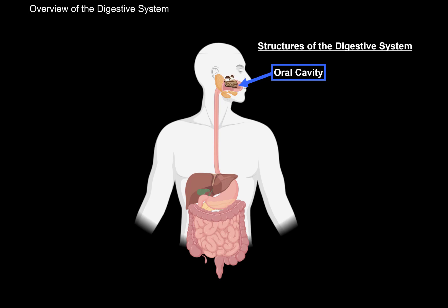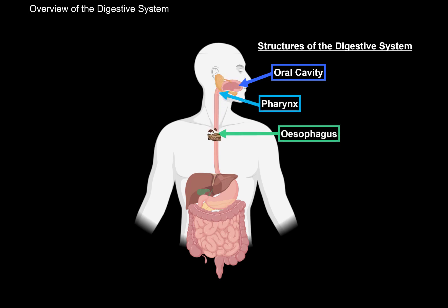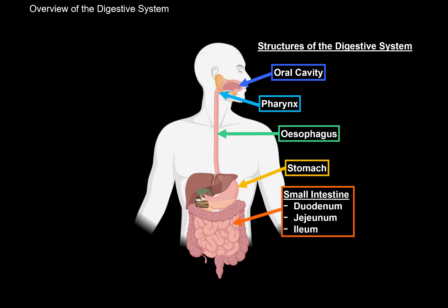After the oral cavity is the pharynx. Then when you swallow the food, it's going to go through the esophagus, and then all the way down to your stomach. After it's been processed by the hydrochloric acid in the stomach, it's then going to enter the small intestine, which consists of the duodenum, then the jejunum, and the ileum.